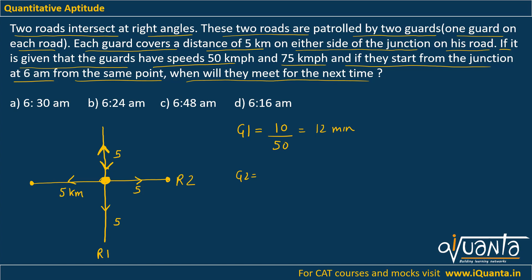There can be only one meeting point over here, which is the junction. So that is why I am considering the distance that they cover to return to the junction. That is why I have taken 10 km for guard one. Same, I will take for guard two as well, but he is roaming at a speed of 75 kmph. Then this will be equal to 600 by 75 in minutes, which is equal to 8 minutes.